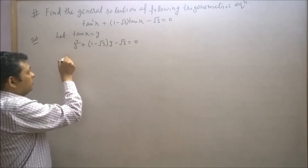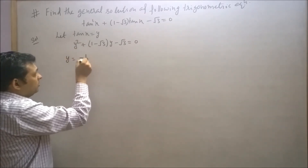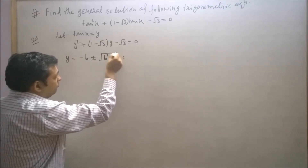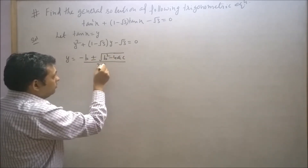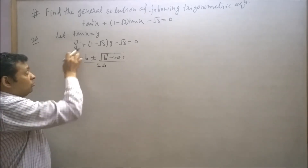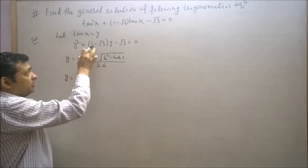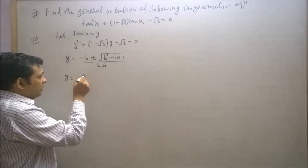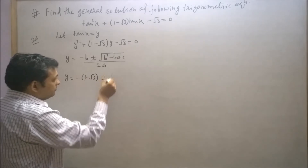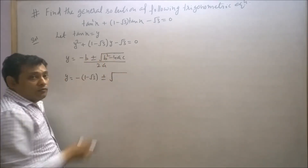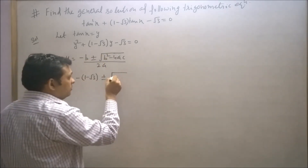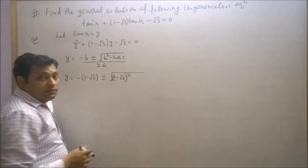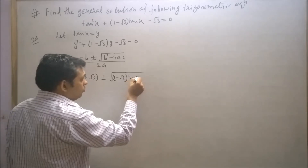We know that y equals minus b plus or minus root of (b² - 4ac) upon 2a. Here b is (1 - √3), so this becomes minus(1 - √3) plus or minus the square root of (1 - √3)² minus 4·(1)·(-√3).